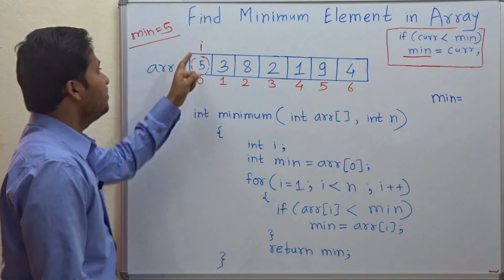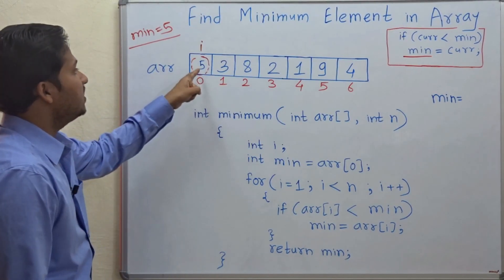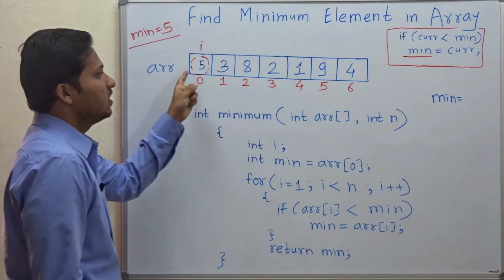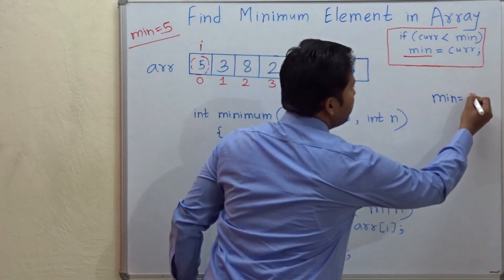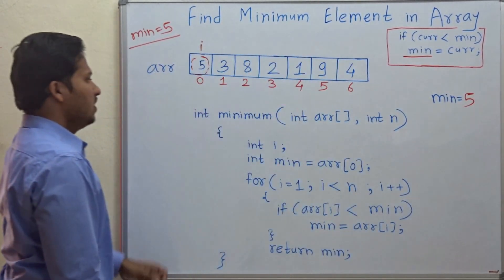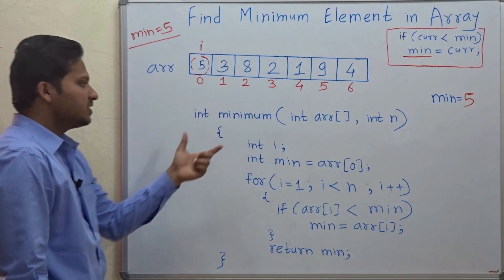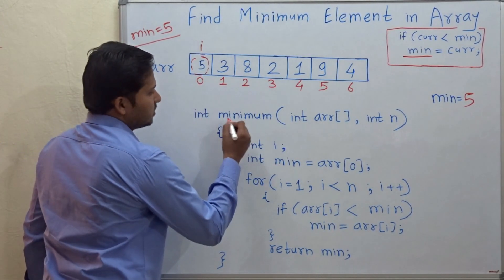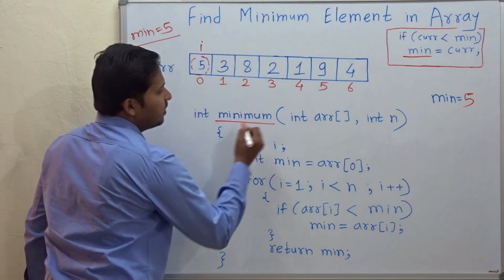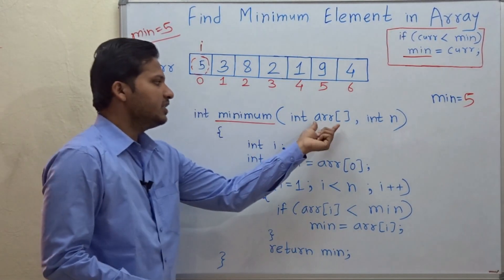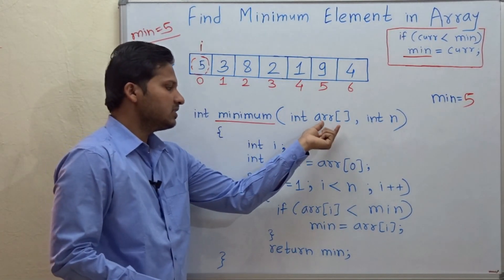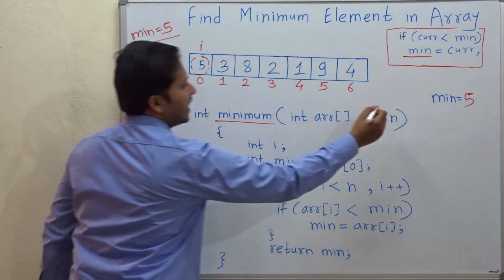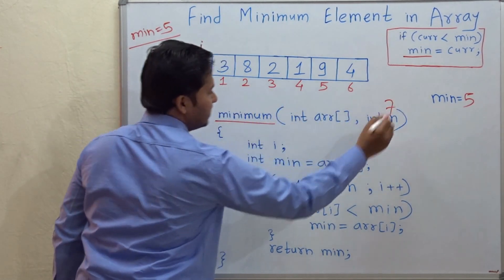After we declare the minimum element to the first element of the array, you have to update the minimum variable. Now let's go and see the function. The function name is minimum, and we are passing two variables — that is the array and the size of the array. In this case, the size of the array is 7.